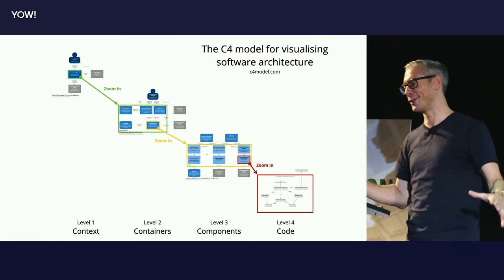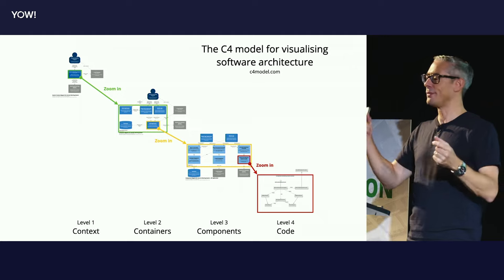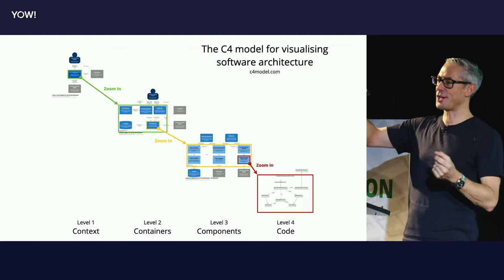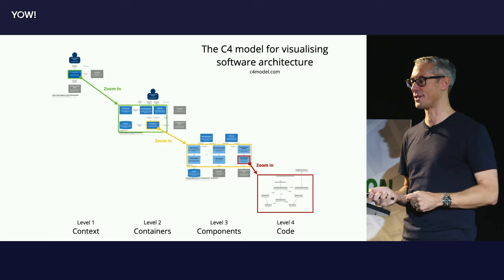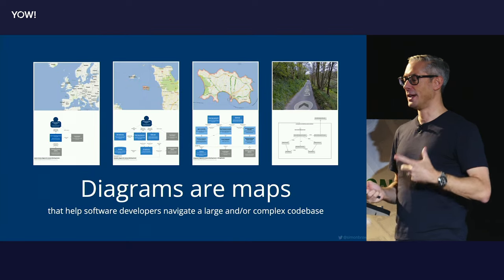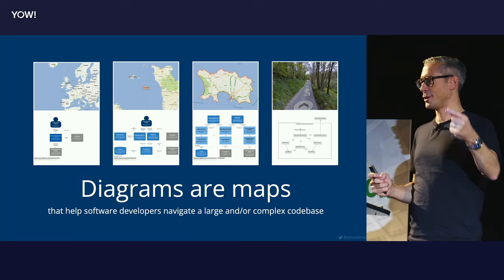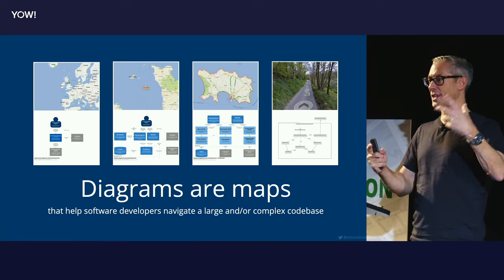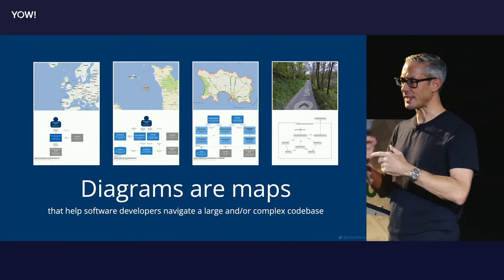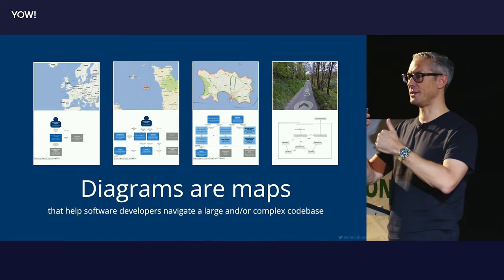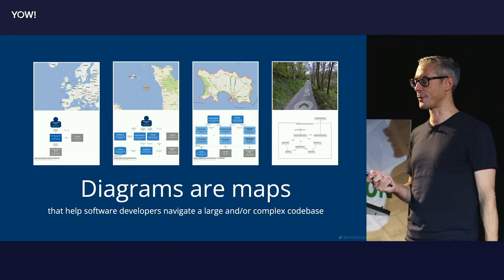I'm basically doing applications and data stores. You zoom into an application, you show components. You zoom into a component, you show code. So it's a hierarchical set of diagrams. The concept here is diagrams as maps — like Google Maps, you want different levels of zoom to tell different stories to different audiences. This allows you to navigate and jump into large and complicated codebases.